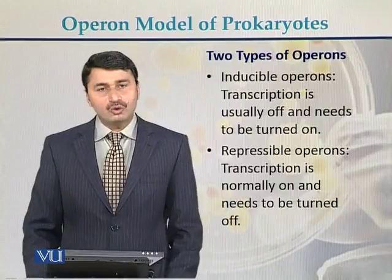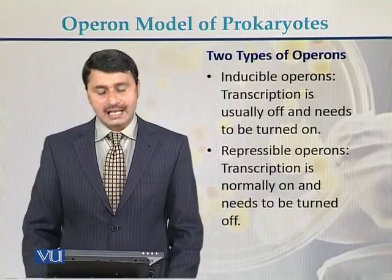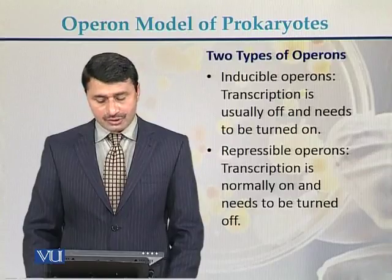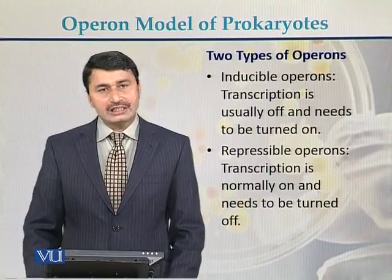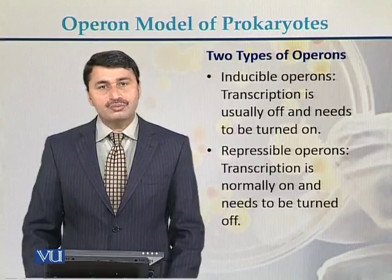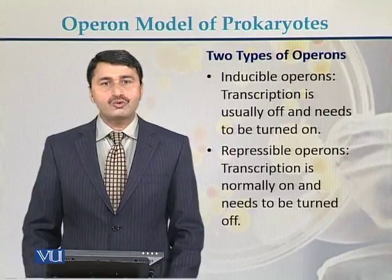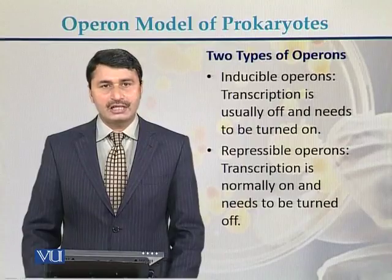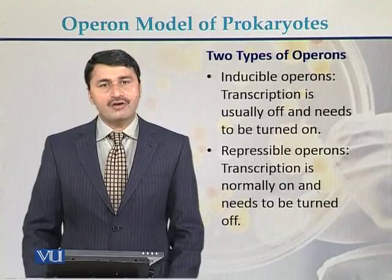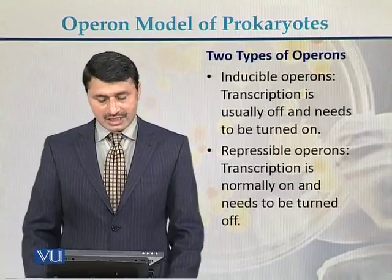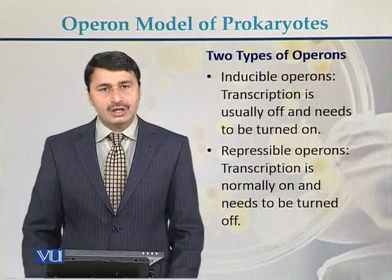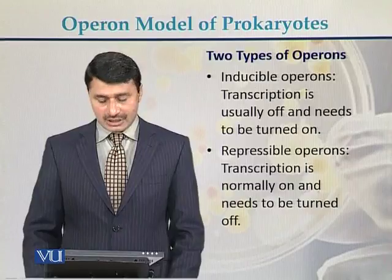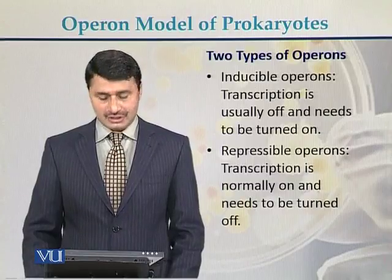There are two types of operons. In inducible operons, transcription is initially off and needs to be turned on — an inducer is required to activate transcription. In repressible systems, transcription is normally on and needs to be turned off, which is why it is called a repressible system.